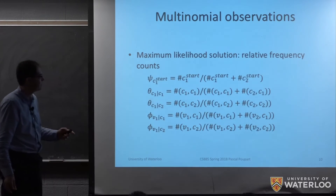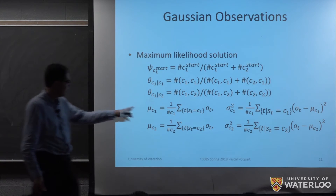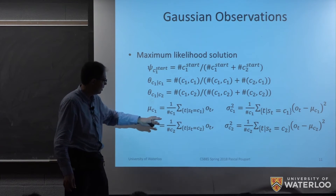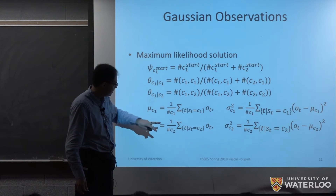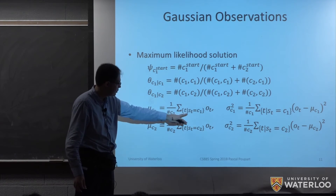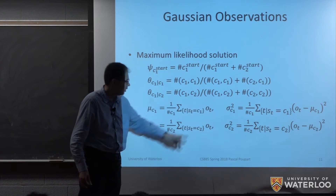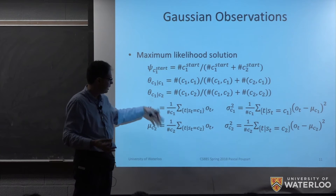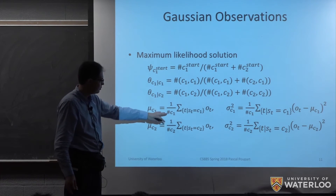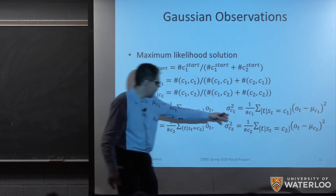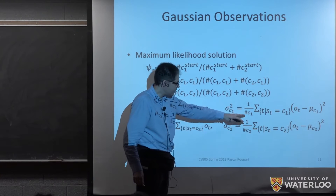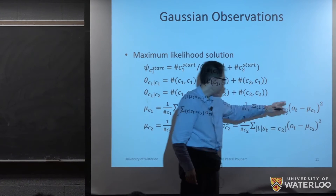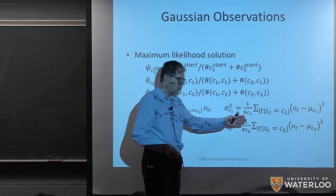You could consider any type of distribution — this is where you use your domain knowledge based on the type of values you observe from your sensors to decide what distribution is appropriate. If you use a Gaussian distribution, we're going to estimate the mean and the variance. For class C1, the mean corresponds to summing all observations where the class was C1 and dividing by the count — that's the empirical average. For the variance, we compute the empirical variance: the difference between observed values and the mean, squared, averaged over how often we are in class C1.